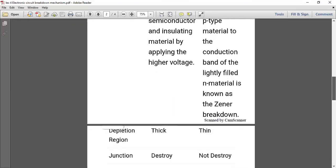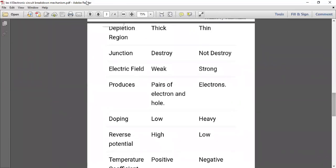The next point is the major differences. Depletion region: when we talk about avalanche breakdown, the depletion region is thick, but when we talk about zener breakdown, the depletion region is thin. In case of junction, avalanche will completely destroy the junction, and in zener it is not completely destroyed - partially the junction is present.